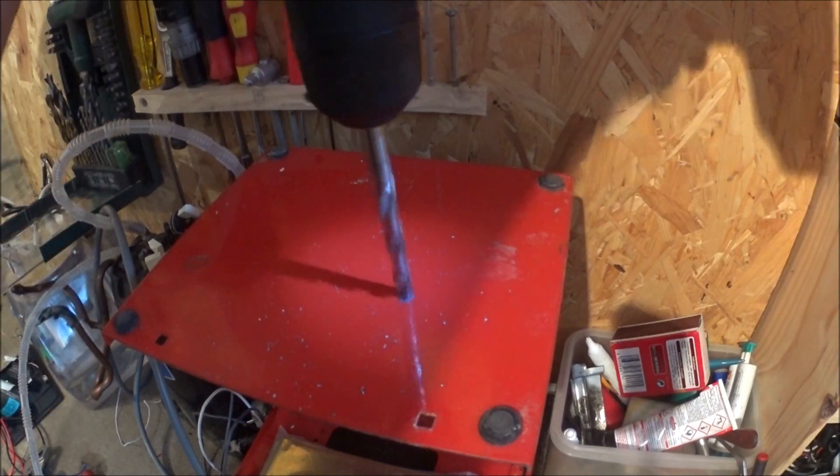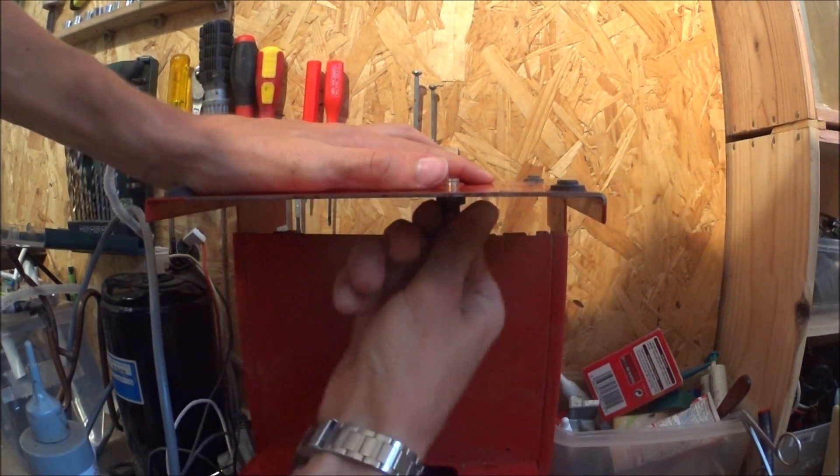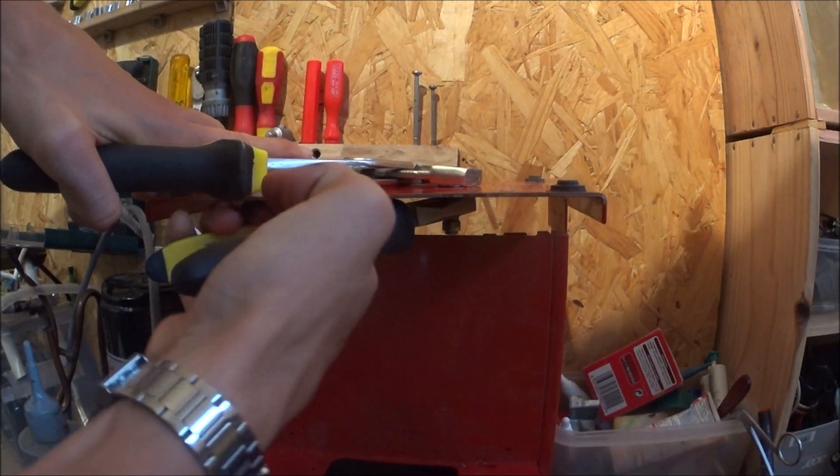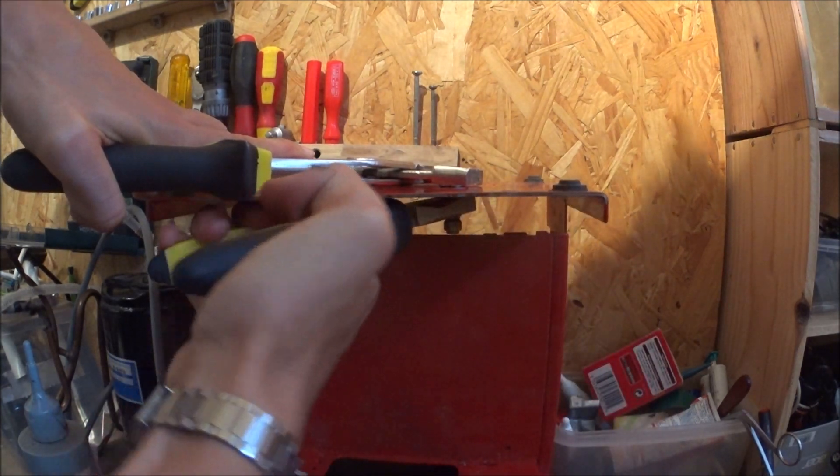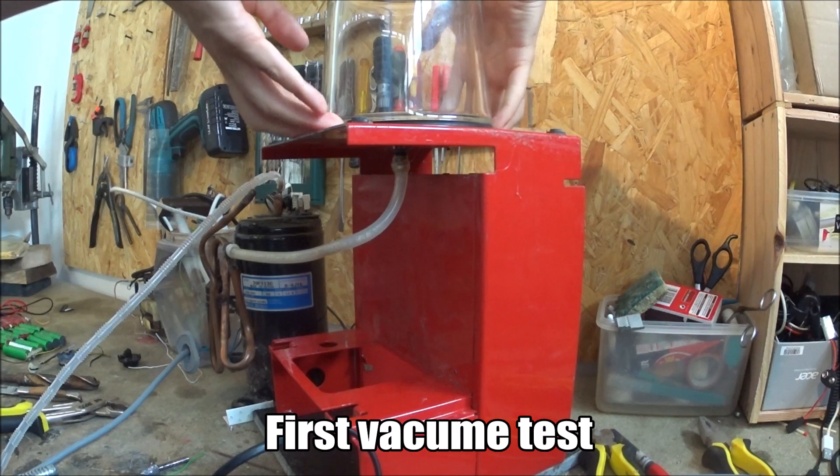I drilled a hole to get the vacuum line through. The nipple is sealed with hot glue and it seems to hold up. This is the first vacuum test I made. The gasket was made with a rubber tube that I closed into a loop.